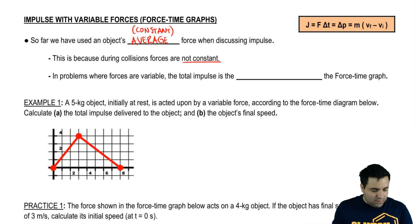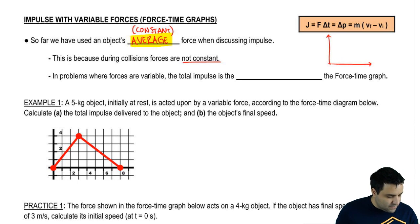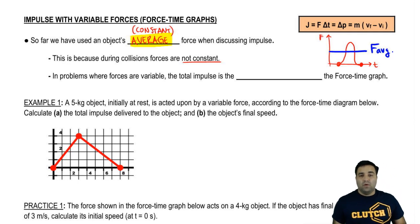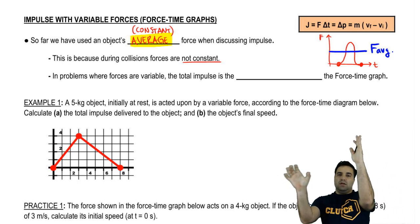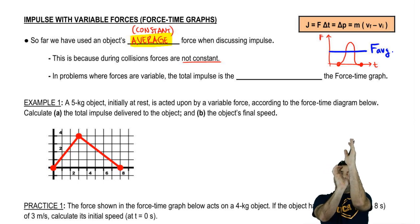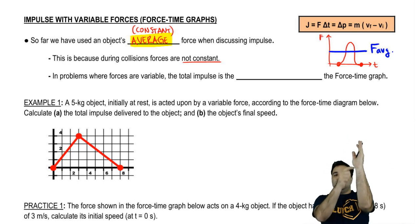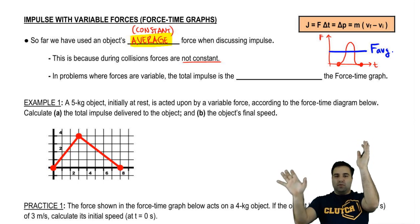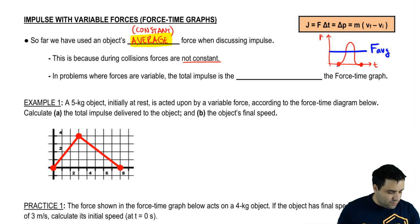So to make things easier, we said let's just talk about the average force. When there's a collision, typically what happens is something like this: the object's moving, then it hits and the force goes up and then it goes down. So this is force over time. Think about when a tennis ball hits a wall — as soon as it starts touching, the wall starts pushing on it. The more the ball compresses, the more surface area has to be pushed against, and then it loosens up. Most collisions will look something like this.